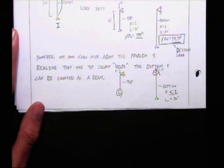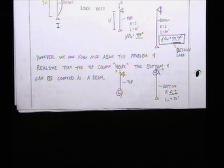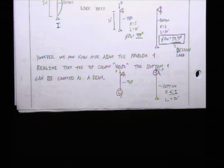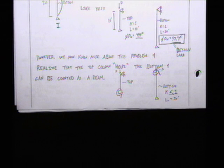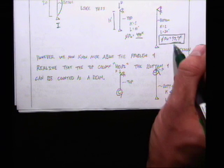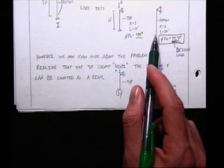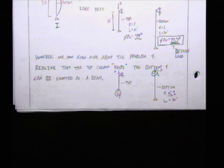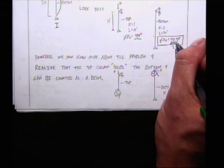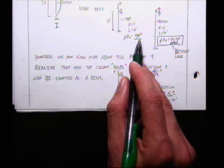But we know more now. We know there is a buckling member and a restraining member. We pick out which is which very quickly: the bottom column has such a low capacity — 97.7 kips — compared to the other, so it's the buckling member and the top column is the restraining member.